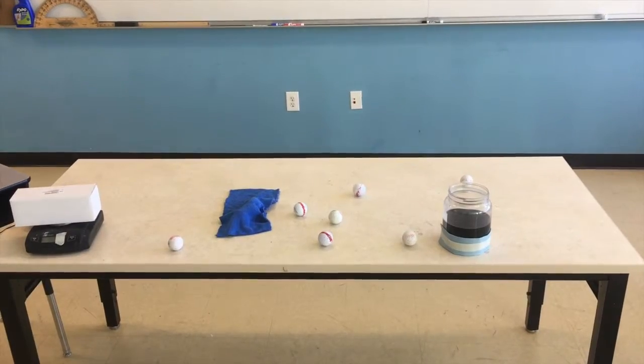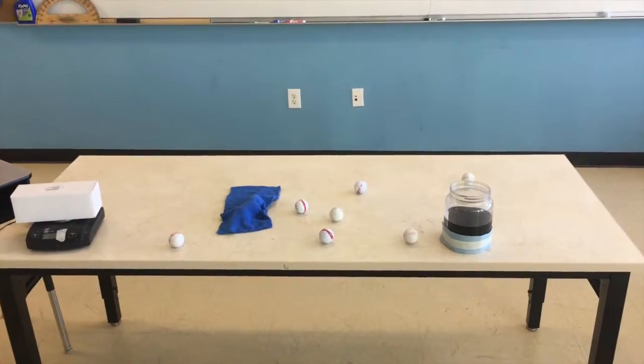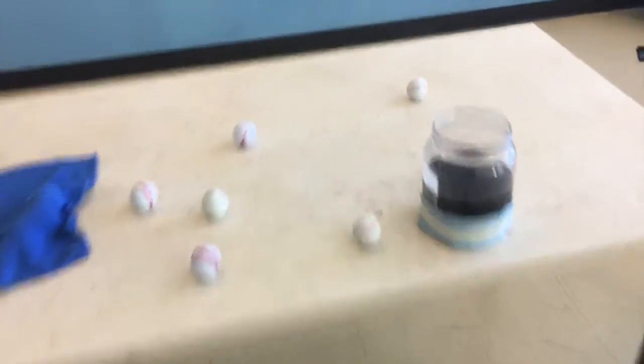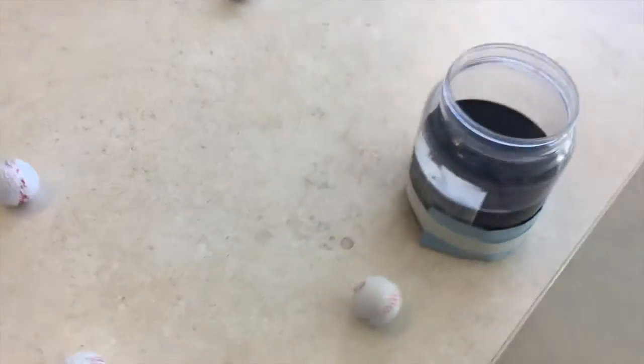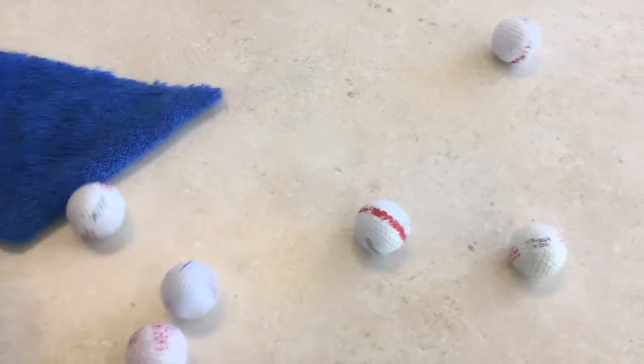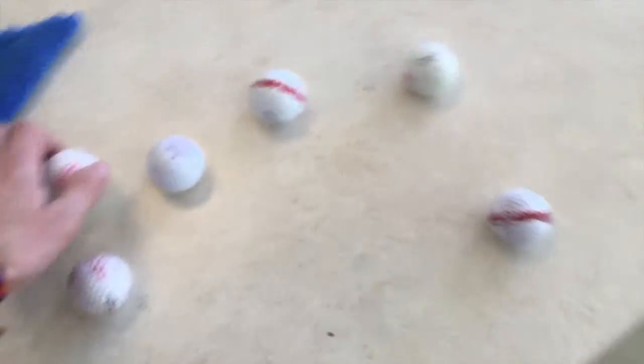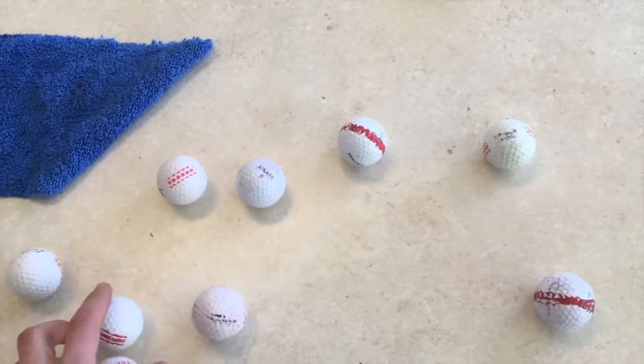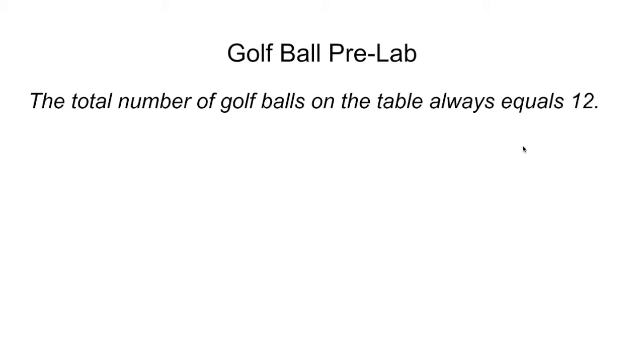We've got some golf balls moved around, but let's go ahead and see if we can count the number of golf balls we have in total. We've got 1, 2, 3, 4, 5, 6 — and if we go in here we've got 7, 8, 9, 10, 11, and 12. So we're starting to see a pattern that the total number of golf balls on the table is always equal to 12.